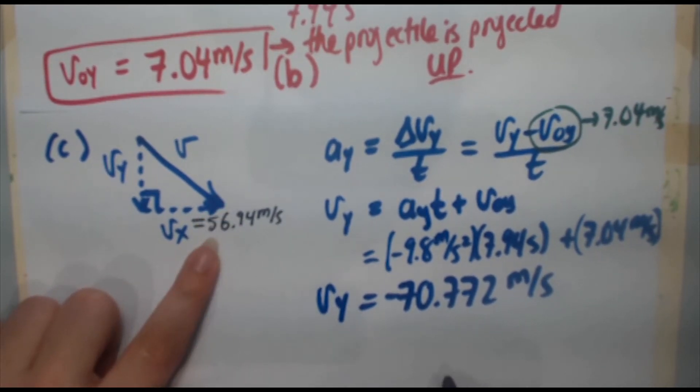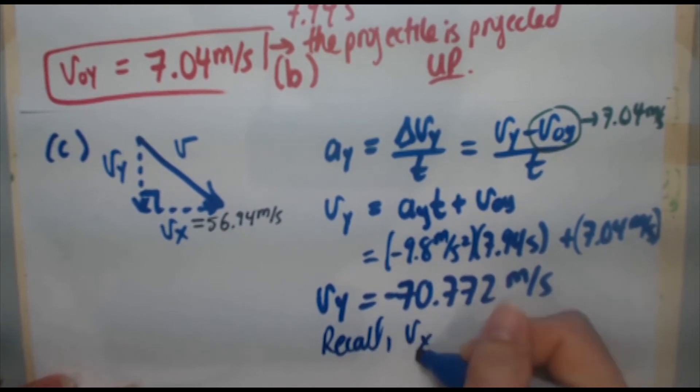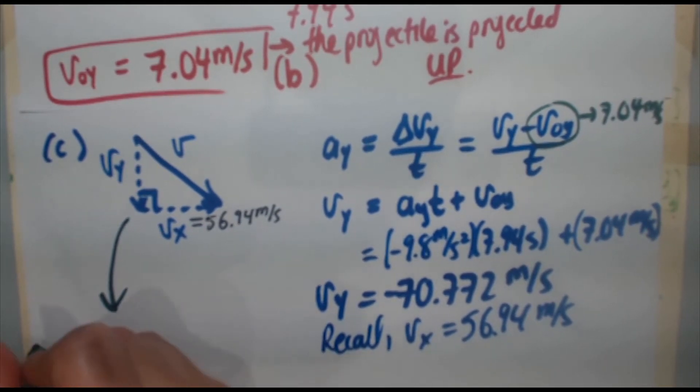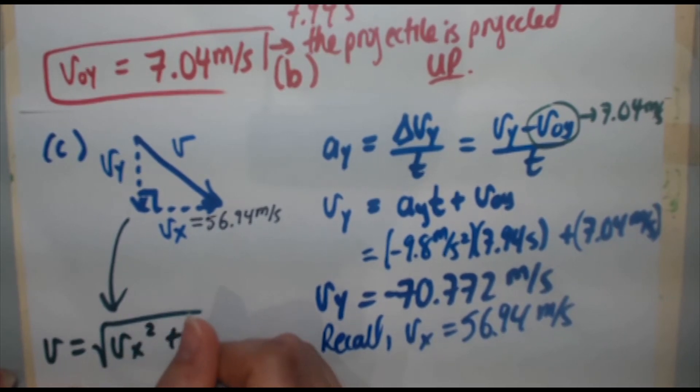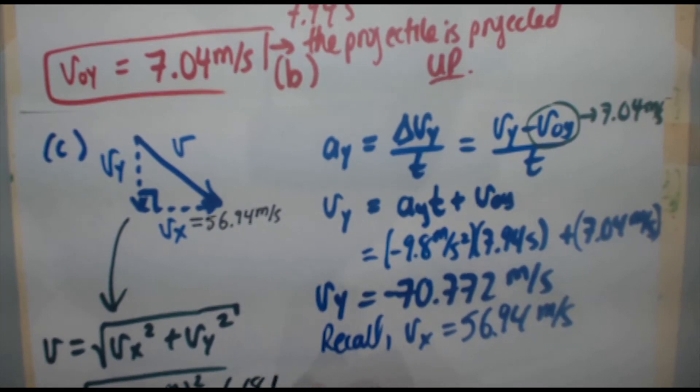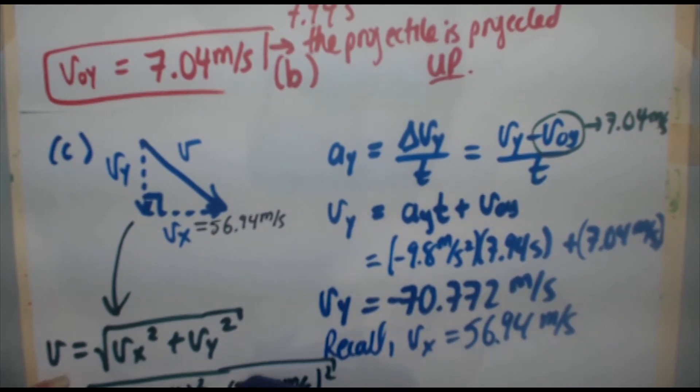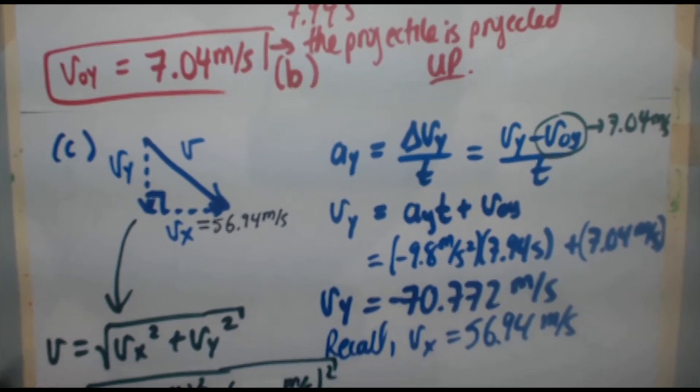Now we need to incorporate this into our long range idea here that we need to have the components. So we've got the VY. Recall VX is equal to 56.94 meters per second. So let's actually solve this over here. Because it's a right angle triangle, again, we're going to be using the idea behind Pythagorean theorem. So V is equal to the square root of VX squared plus VY squared. So let's plug in our values there. VX, 56.94 meters per second squared plus negative 68.1 meters per second squared. That should actually be, pardon me, the VY should be 70.772.